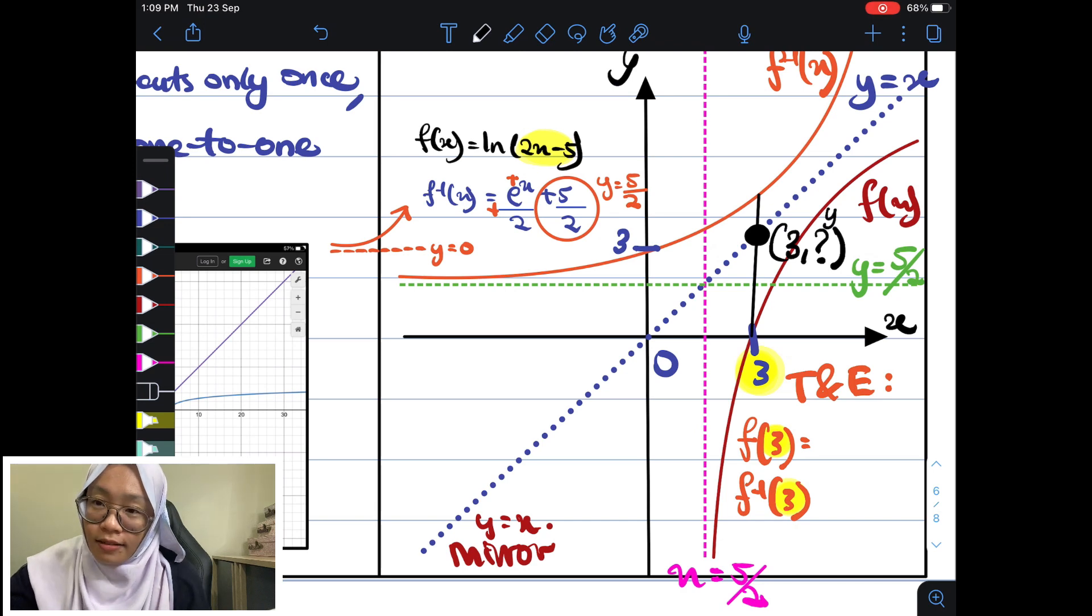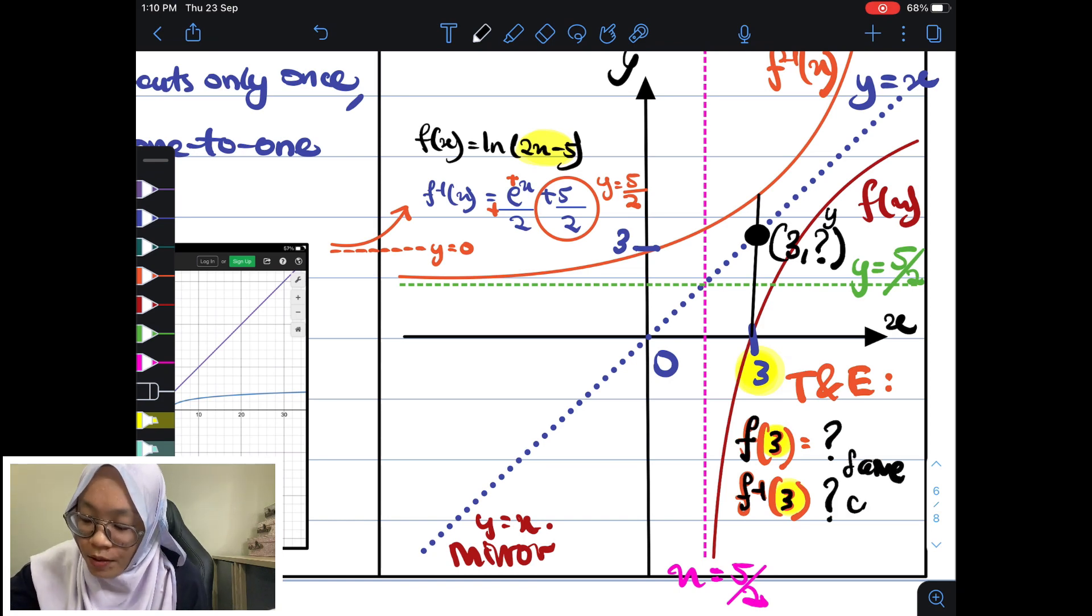So, now, sebab tu, saya masukkan ke dalam f dan juga f inverse. Masukkan 3 untuk cari nilai koordinat y dia sama ataupun tidak. Kalau dia sama, maksudnya dia cross lah. Kalau nilai dia sama, maksudnya dia cross. Kalau nilai y dia tidak sama, dia tak akan cross. Dia separate. Dia split out.